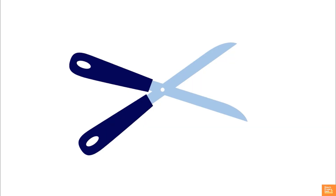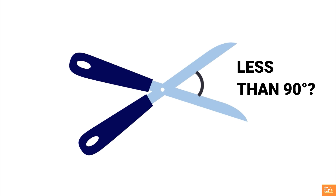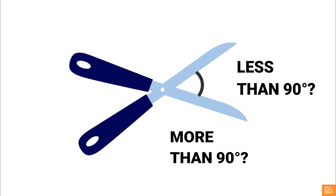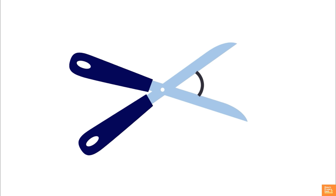Now I am going to display some pictures of everyday life objects you are familiar with. Try to identify and indicate the angles on the objects. Also, classify the angles based on their magnitude. Look at this picture. Can you mark the angle made by the jaws of these scissors? Is this angle less than 90 degrees or more than 90 degrees? The vertex of the angle is the conjunction of the jaws of these scissors.